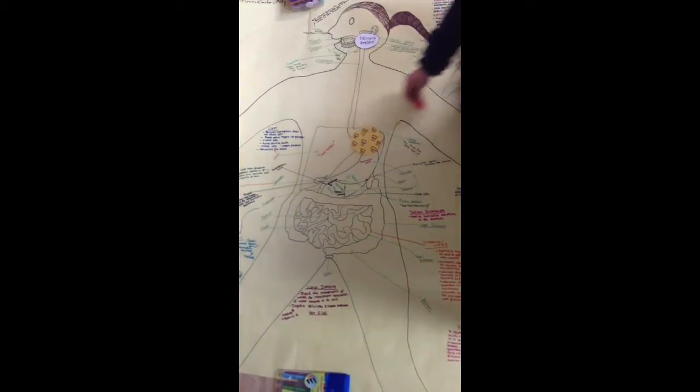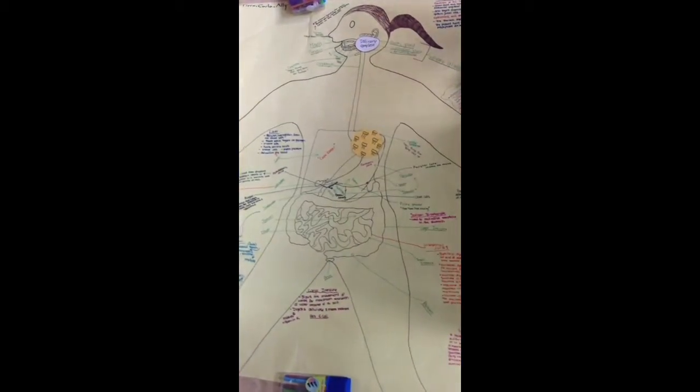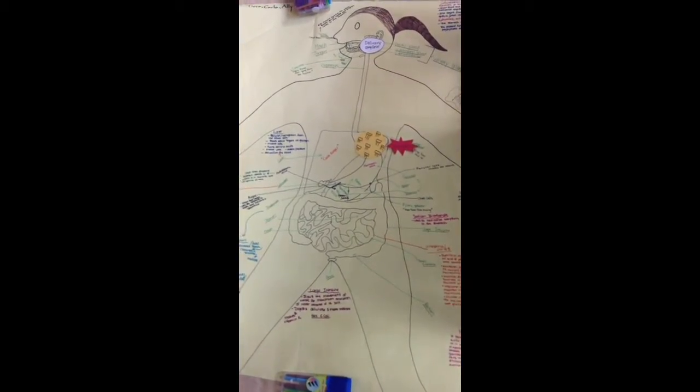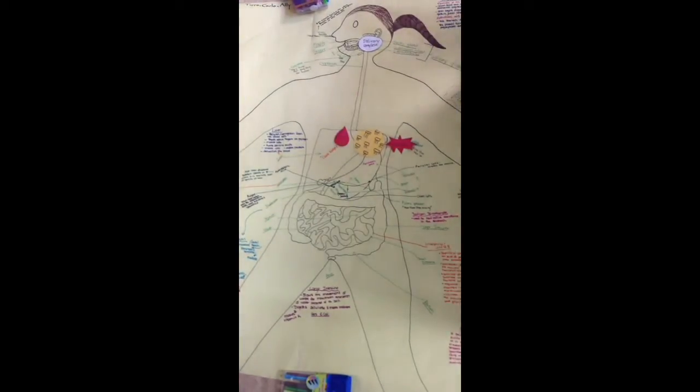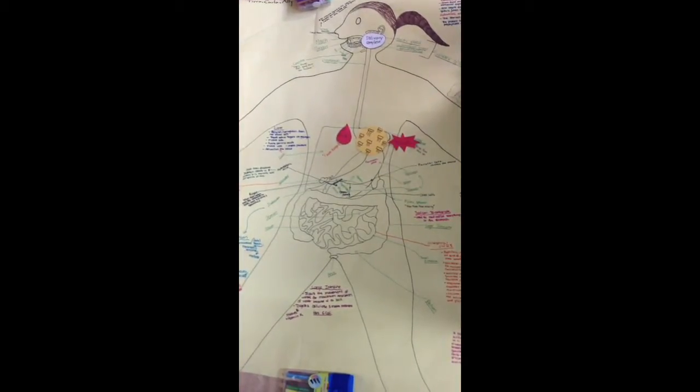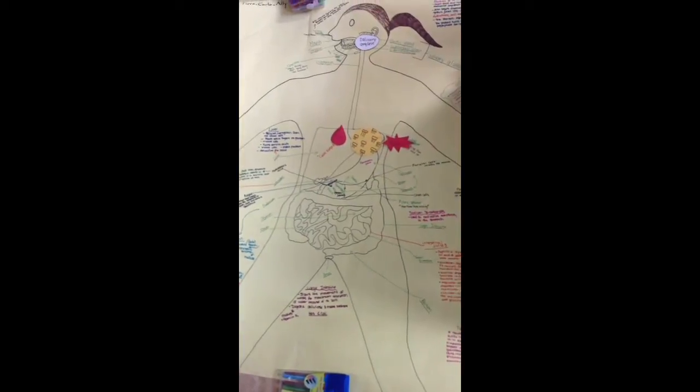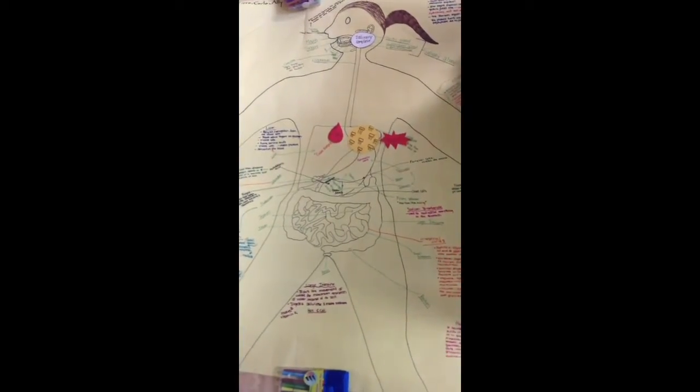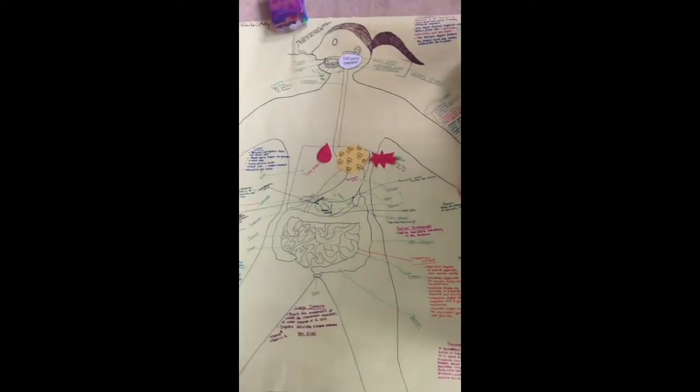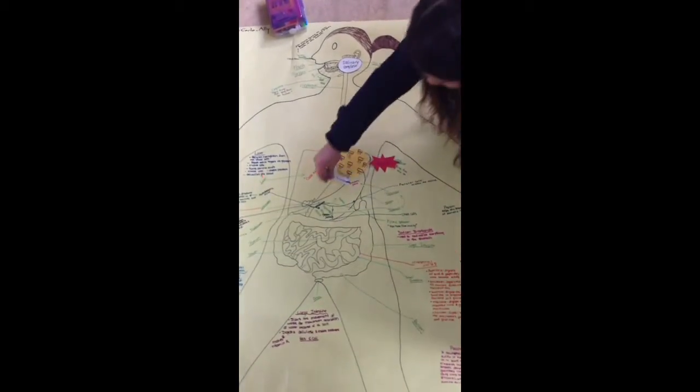When the fats reach the duodenum, two hormones are released: secretin and CCK. Secretin causes the release of the pancreatic juices, and CCK causes the release of bile from the gallbladder and an additional release of the pancreatic juices. Sodium bicarbonate neutralizes the pH to 8.5 so all the enzymes can work at their optimum pH.